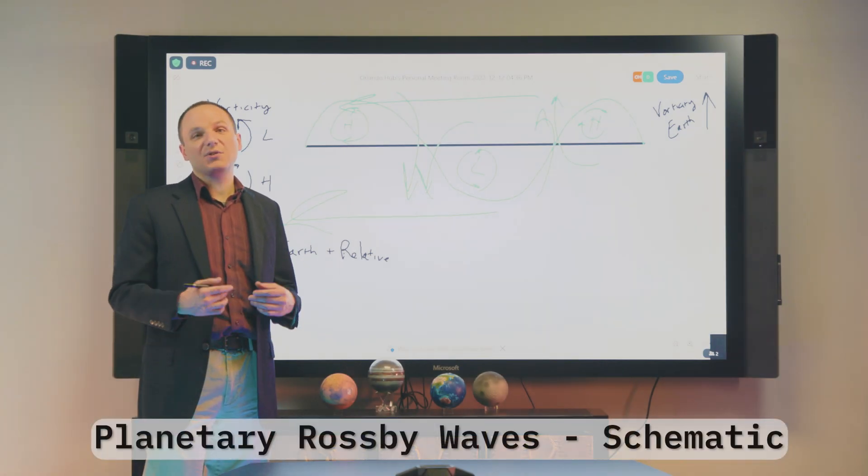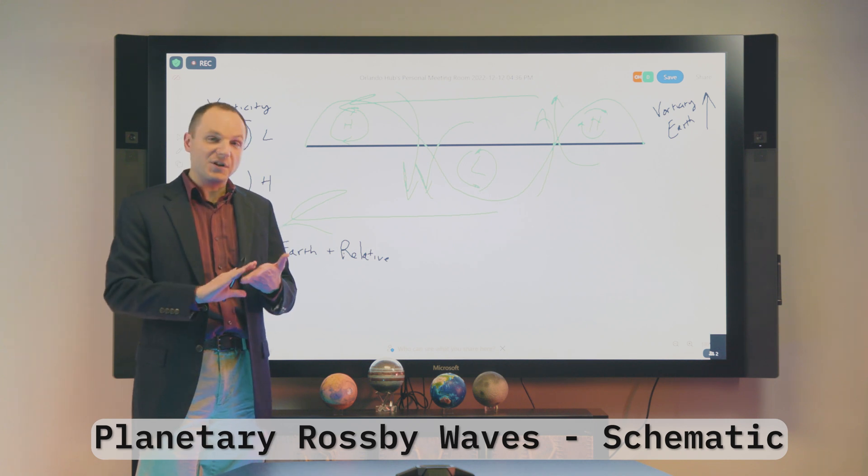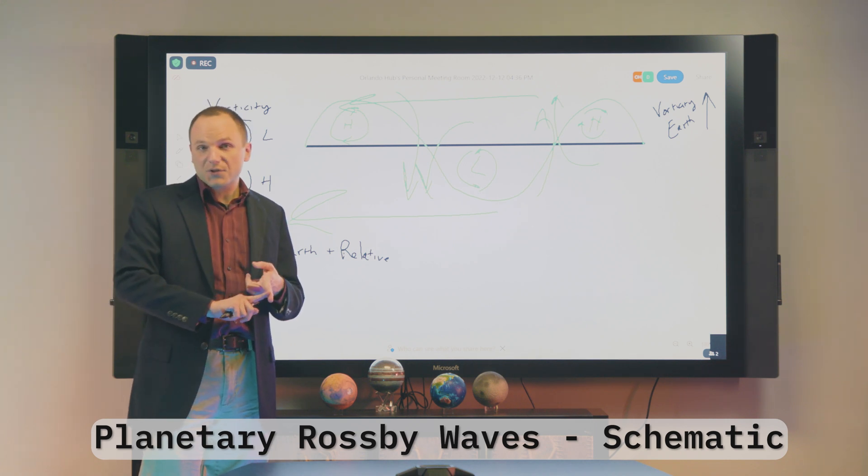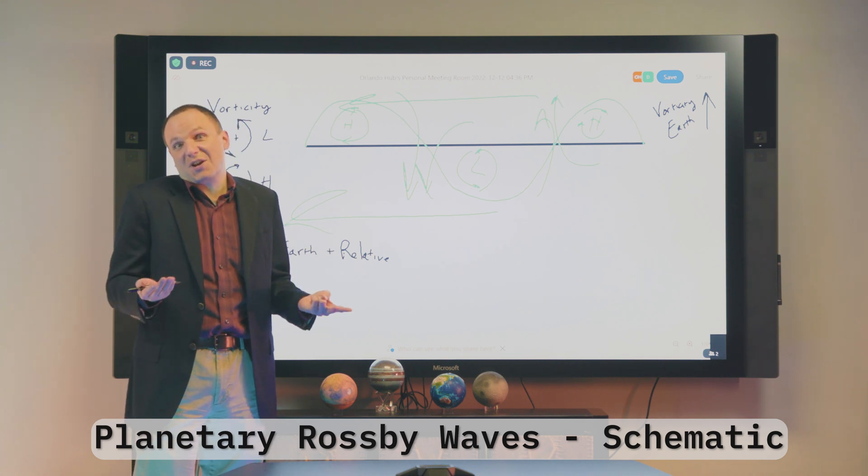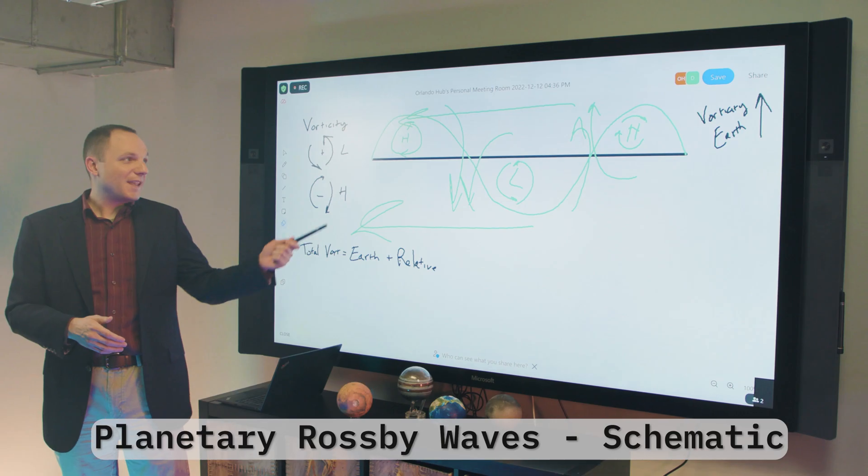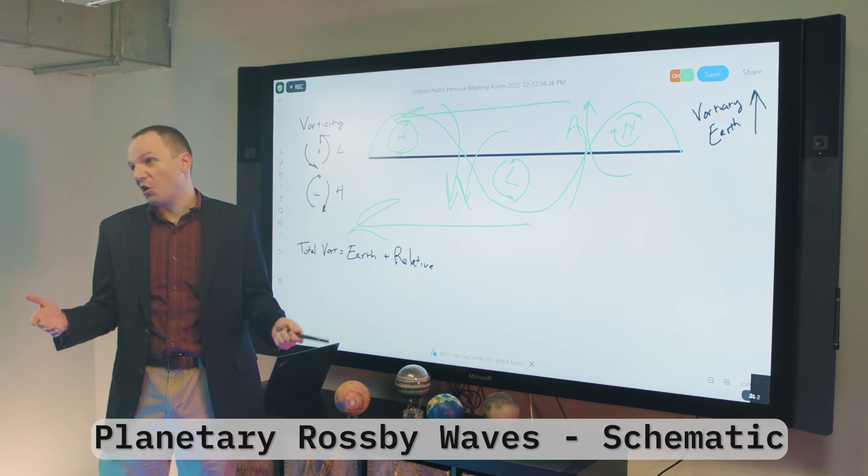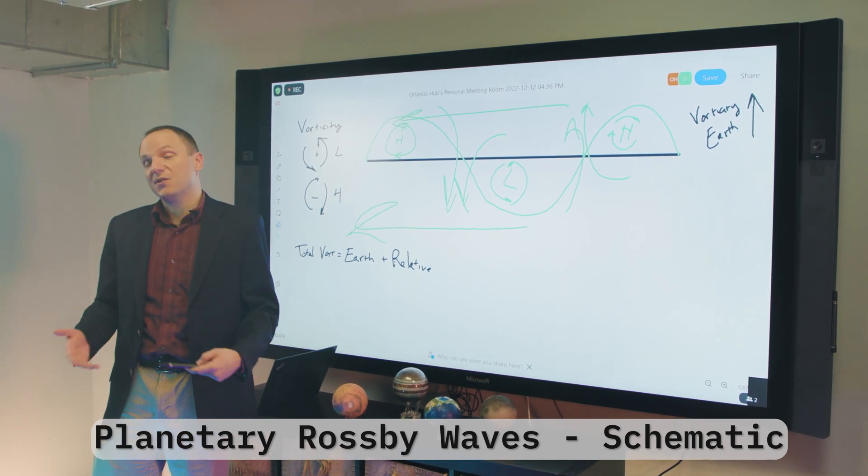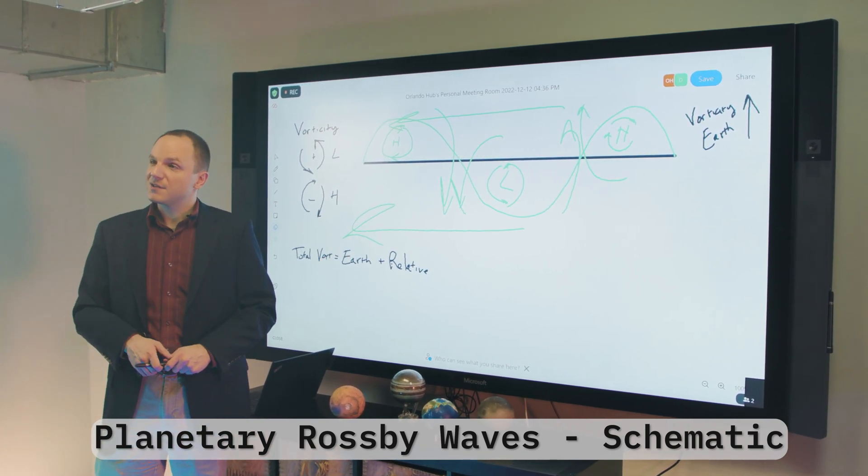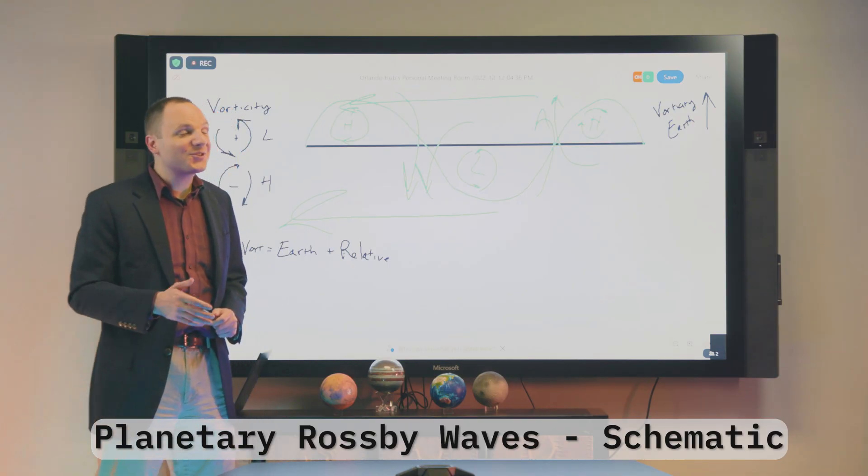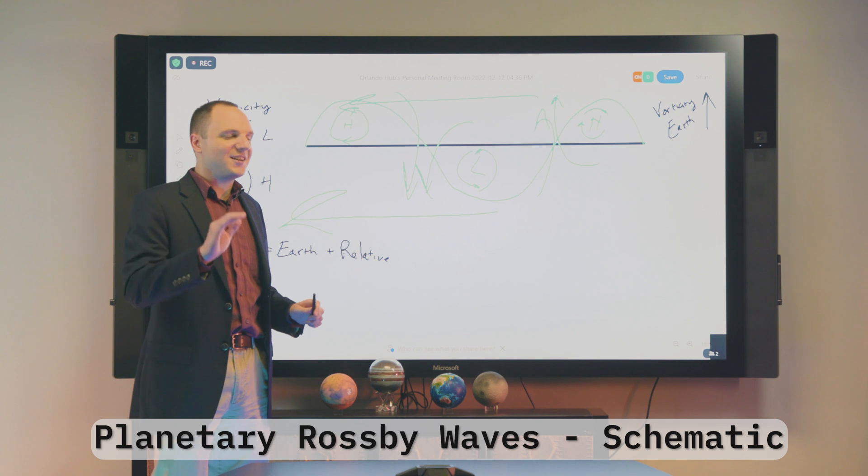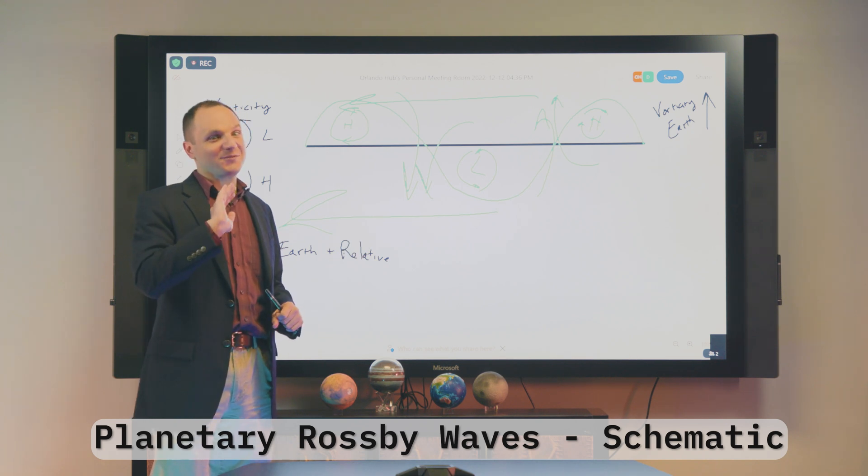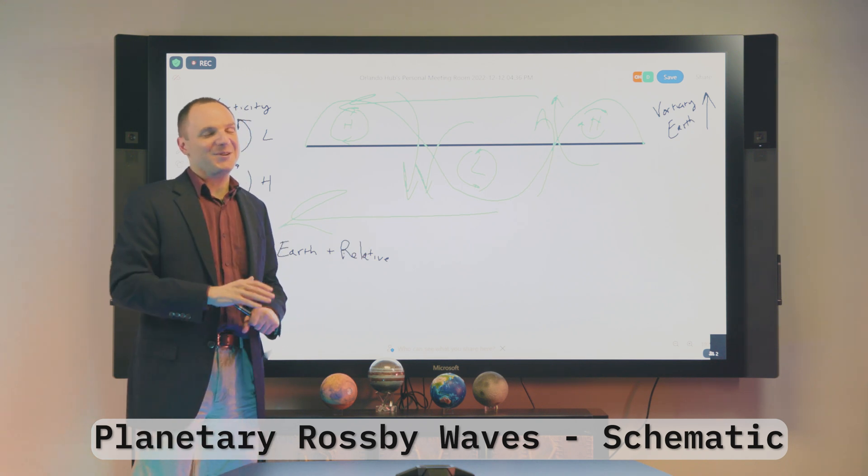So in meteorology we usually name waves after one of two ways. After the restoring force, what actually causes the wave to oscillate, or the person who discovered them or mathematically came up with them. And the person who found this was someone named Carl Gustav Rossby. And to this day we call them Rossby waves. If you want the actual technical term, this is probably more like a potential vorticity wave. Potential vorticity is a talk, is a way different talk. We'll save that for a much different time.